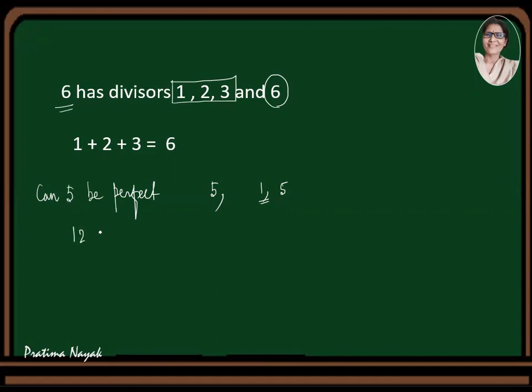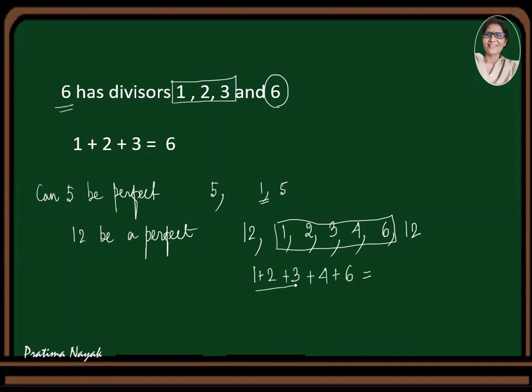Can 12 be a perfect number? Let us check. 12 has factors: one, two, three, four, six, twelve. Now, according to the definition, if I add these factors excluding 12 and if this gives the result 12, then it is a perfect number. One plus two plus three plus four plus six. Does it make 12? 12 plus six, 12 plus 16. This is 16. The sum is not equal to 12. So 12 is not a perfect number.